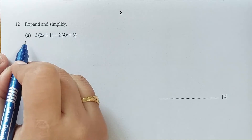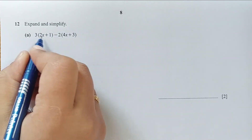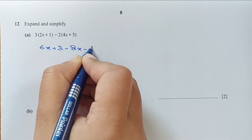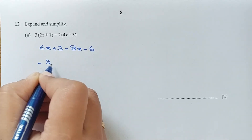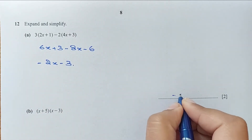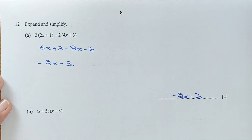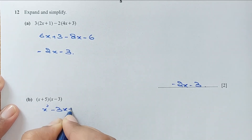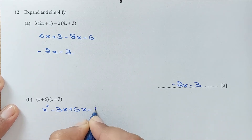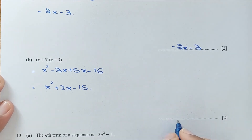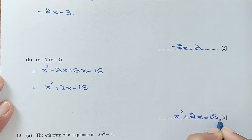Question number 12, expand and simplify part A. 3 times (2x + 1) minus 2 times (4x + 3): that gives 6x plus 3 minus 8x minus 6, which simplifies to minus 2x minus 3. For part B, expand and simplify (x + 5)(x minus 3): giving x² minus 3x plus 5x minus 15, so x² plus 2x minus 15.